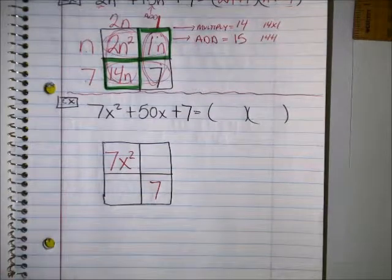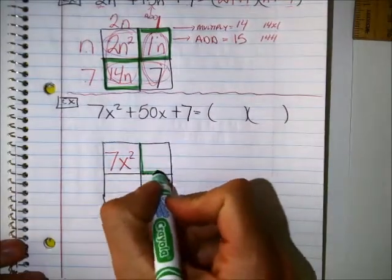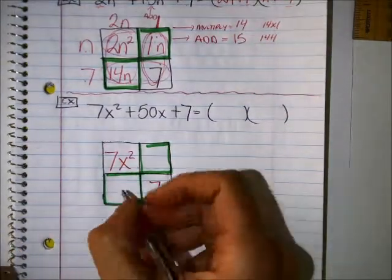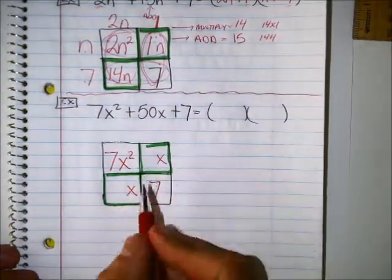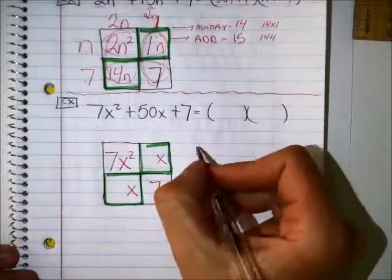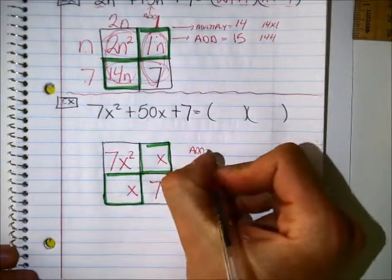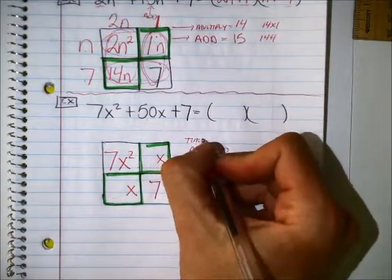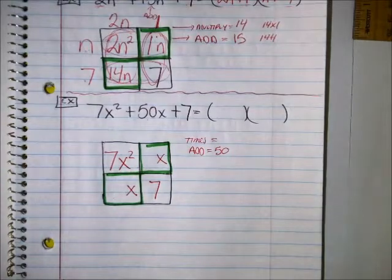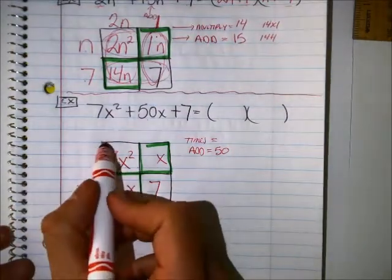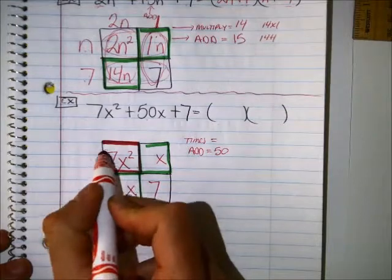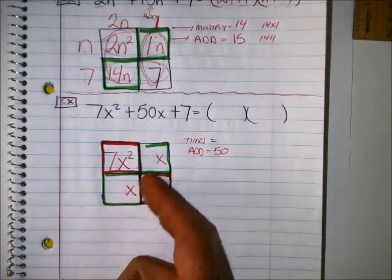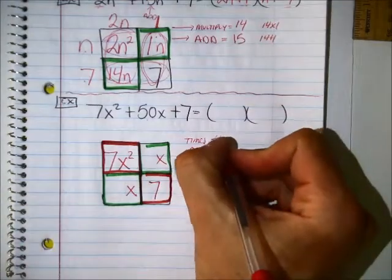7 and 7x squared. Right. The other two boxes, those are the tricky ones. Those two have to add up to make 50. You know there's going to be x's in them. The coefficients are going to add up to make 50. So I'm looking for two numbers that add up to make 50. And what are they going to times and make? They're going to times and make the same thing as these other two boxes. 7 times 7 is 49. So these other two boxes must times to make 49 as well.